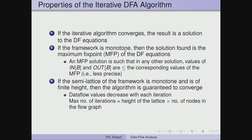If the framework is monotone, the solution found is what is known as the maximum fixed point (MFP) of the data flow equations. The MFP solution is such that in any other solution, the values of in and out are less than or equal to — that is, less precise than — the corresponding values of the MFP. The MFP is the best result obtainable by the iterative algorithm; any other solution would only be less precise.